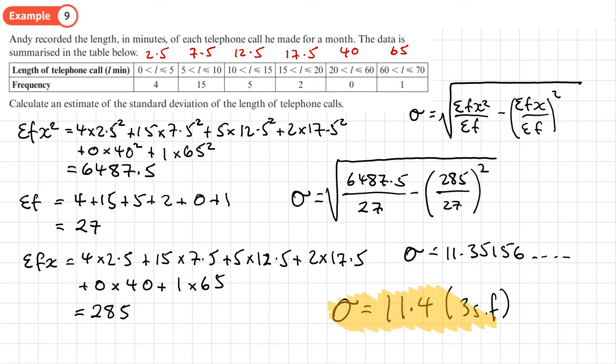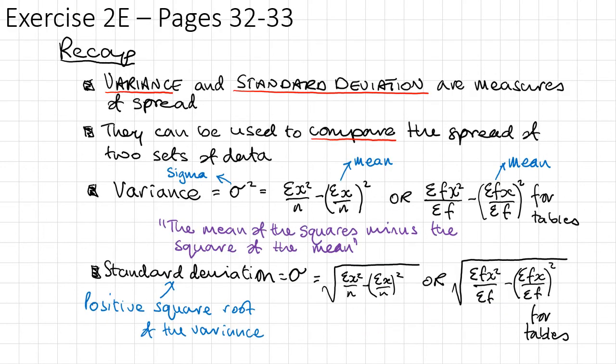When you do this type of calculation, you can write down intermediate bits of your calculation. For example, what you get for this, what you get for this. But this is the important part: working out these values and showing that you've got them in the correct place in the formula. You should now be able to do exercise 2E on pages 32 to 33 of the textbook.